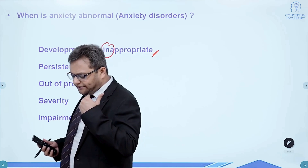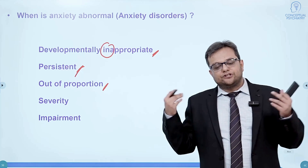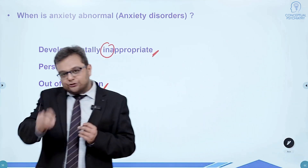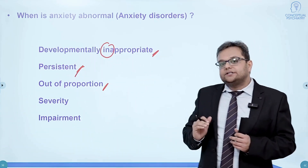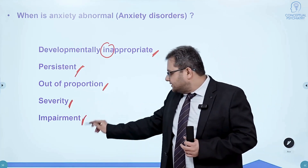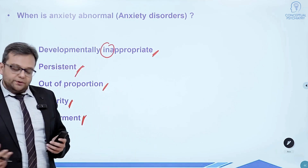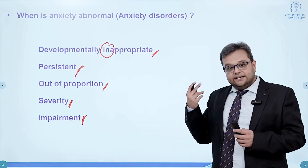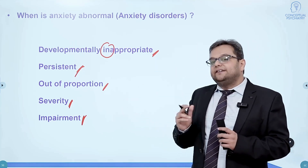A person having fear or anxiety about anything — normally there will be a proportion in which most people would have that level of anxiety — but if it is out of proportion to the actual threat and based on social context, then we call it pathological anxiety. Obviously, severity and impairment matter: if it is hindering daily functions, very severe in nature, and impairing personal, social, occupational, or educational life, then we call the anxiety abnormal or pathological. These parameters are important when we consider anxiety disorders.